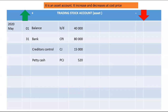Trading stock will also increase when customers return goods to the business. Whenever a sale is affected, the two accounts involved are trading stock and cost of sales. In this case, you debit trading stock and credit cost of sales. This comes from the Debtors Allowances Journal, but only for goods actually returned by the customer — not for allowances. There is no cost of sales entry for allowances.